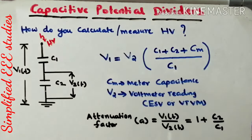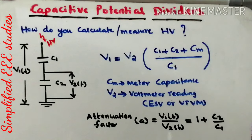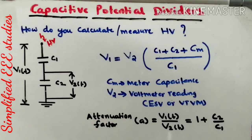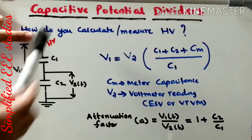Usually, this kind of voltage will be either fast rising voltage, impulse voltage, or high pulses. This can be easily measured with the help of Capacitive Potential Divider. While designing, one important factor is the attenuation factor, which plays the most important role. The attenuation factor is the ratio of V1 divided by V2, which equals 1 + C2/C1. Knowing the values of C1 and C2, you can easily calculate the attenuation factor. This is the way to calculate the total voltage externally using Capacitive Potential Divider.